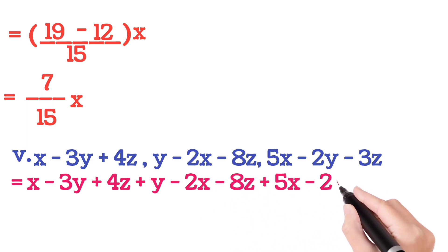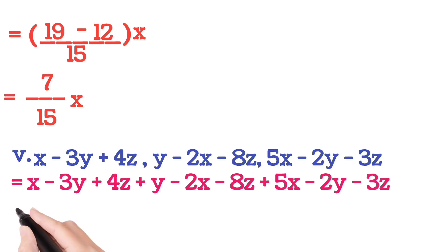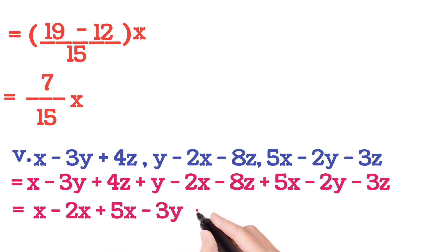Pause the video and watch carefully and write. Now you group all the terms with variable X together, Y together, and Z together. So you write X minus 2X plus 5X, then minus 3Y plus Y minus 2Y, then plus 4Z minus 8Z minus 3Z. Now see.